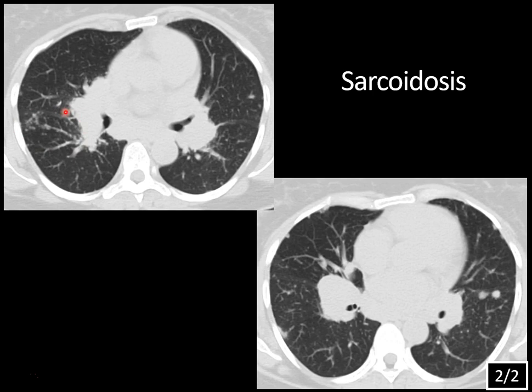This would be consistent with stage 2 sarcoidosis. There are five radiographic stages: stage 0 is normal, stage 1 is lymphadenopathy only, stage 2 is lymphadenopathy and parenchymal disease, stage 3 is parenchymal disease only, and stage 4 is end-stage pulmonary fibrosis.